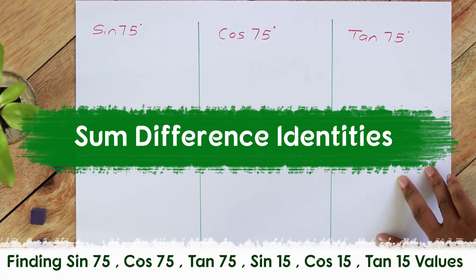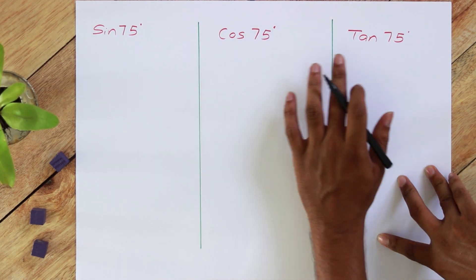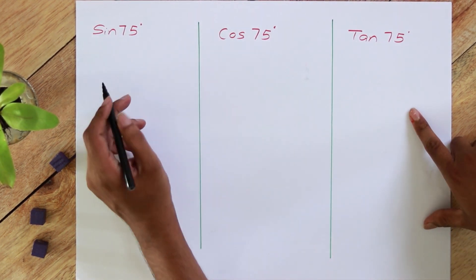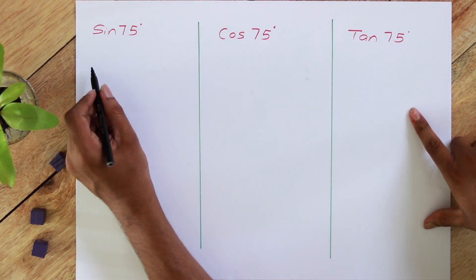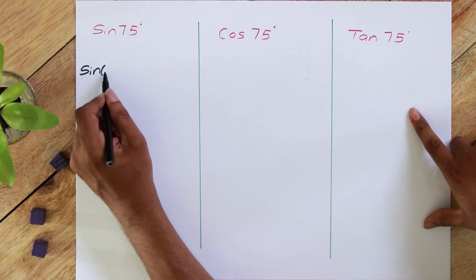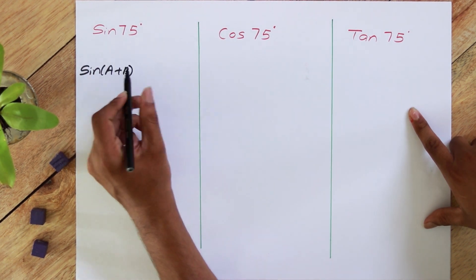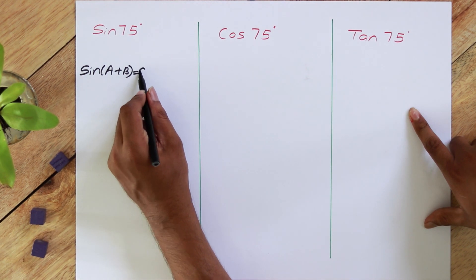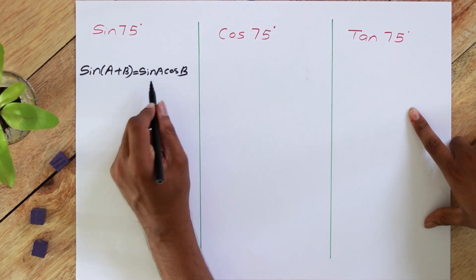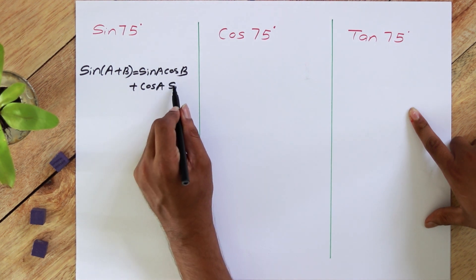Now let's see how to find the values of sin 75, cos 75, and tan 75. In the previous video we learned about some sum identities. If you consider sin(A+B), we can write it as sin A cos B plus cos A sin B.